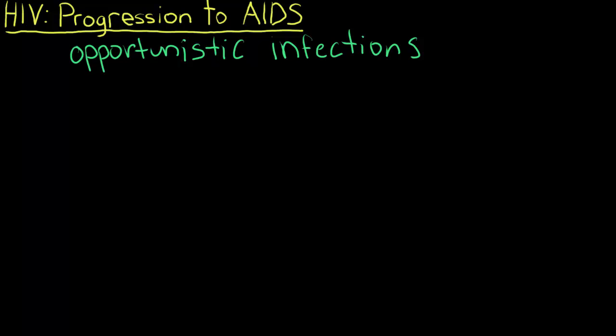These are infections that a person with a healthy, normal immune system wouldn't get because the immune system is able to fight them off. However, if someone has HIV and the virus kills off a lot of the immune system, then that person would be susceptible to these infections.